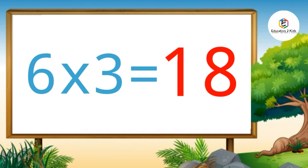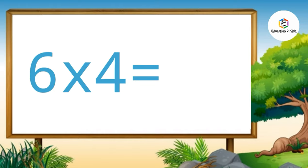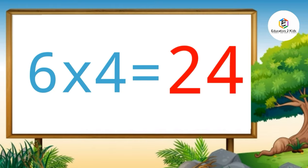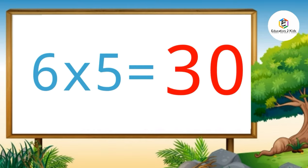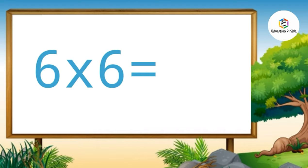Six fours are twenty-four. Six fives are thirty. Six sixes are thirty-six.